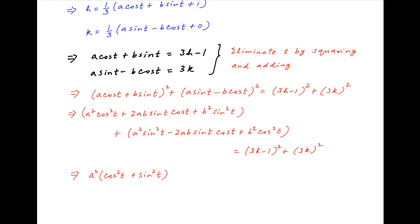On the left-hand side, collecting the coefficients of a², we get a²·(cos²(t) + sin²(t)), and collecting the coefficients of b², we get b²·(sin²(t) + cos²(t)). The term 2ab·sin(t)·cos(t) cancels out on the left-hand side. This equals the right-hand side, which is (3h − 1)² + (3k)².